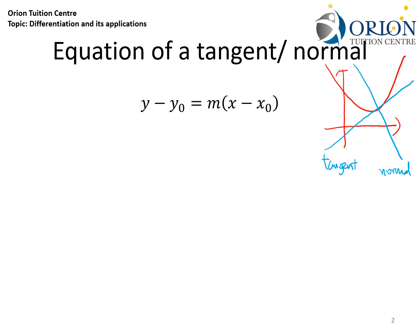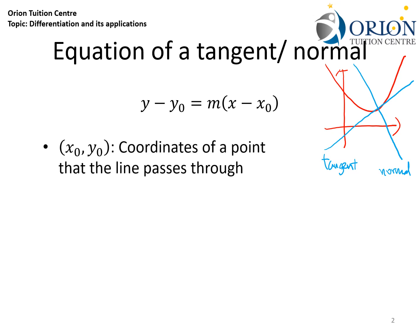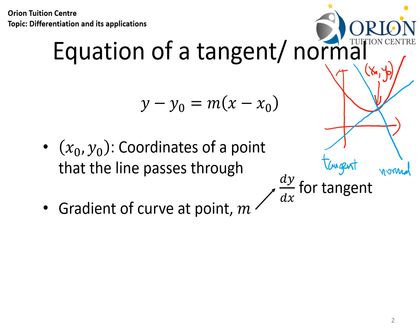y minus y₀ equals to m(x minus x₀), where (x₀, y₀) is the coordinates of the point of interest, and m is the gradient of the line. The gradient of a tangent is simply dy/dx, and the gradient of a normal is negative 1 divided by dy/dx, since the product of two perpendicular lines is always equal to minus 1.